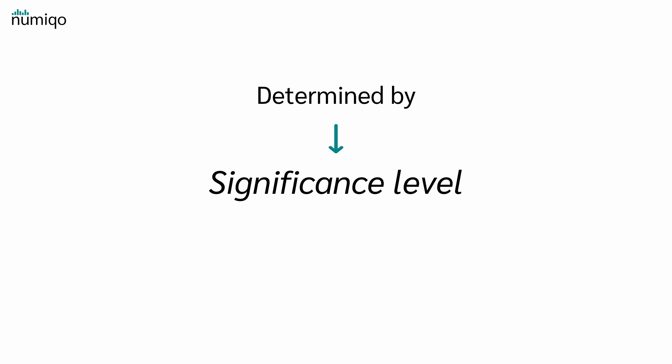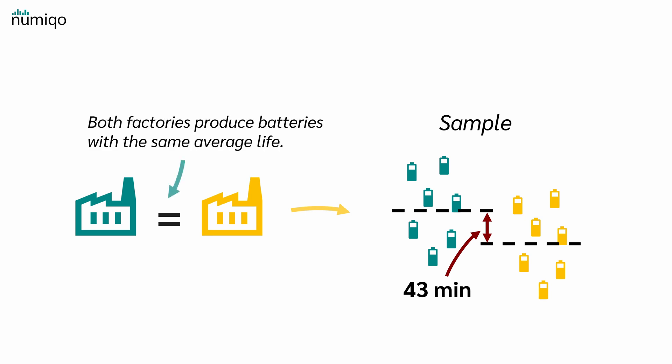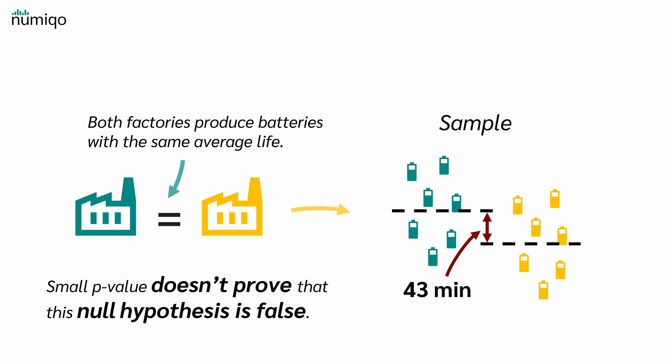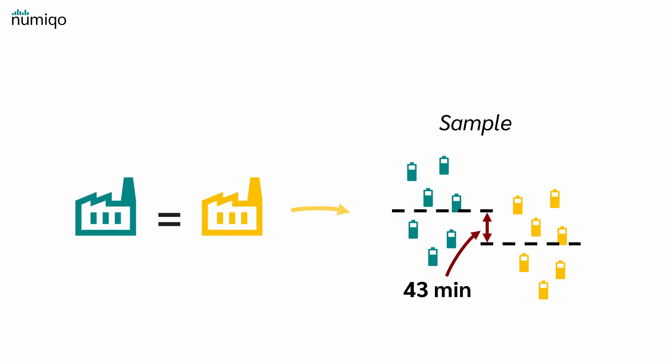This is determined by the significance level, which is typically set to 5%. If the calculated p-value is less than 5%, we say the probability of seeing data this extreme or more extreme is under 5%, and therefore we reject the null hypothesis. But here is a really important and confusing point about the p-value: a small p-value doesn't mean the null hypothesis is false. It only says the observed result, or something more extreme, is unlikely if the null were true. So if there really is no difference, it's very unlikely we'd see a result this large or more extreme.